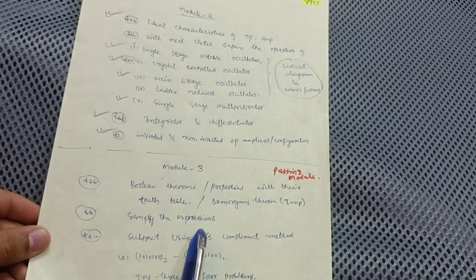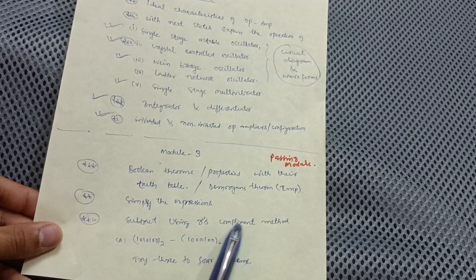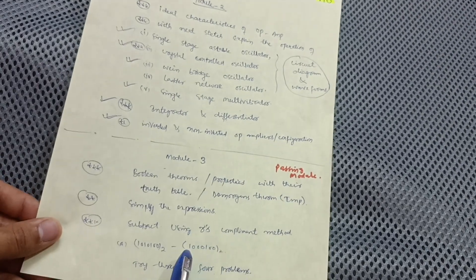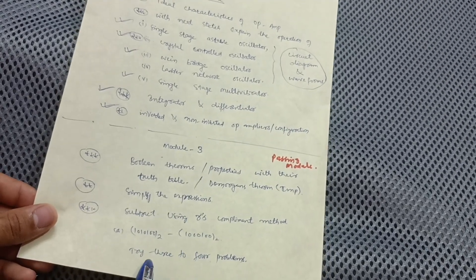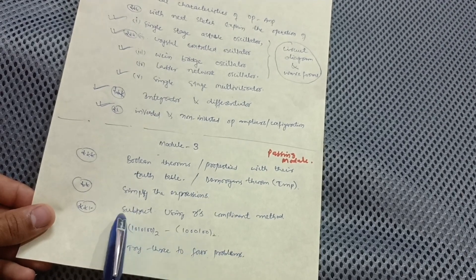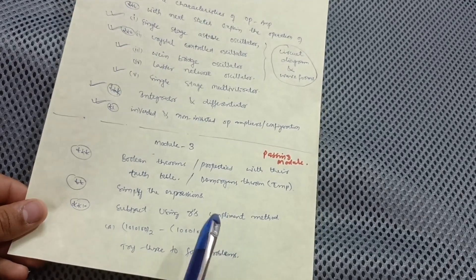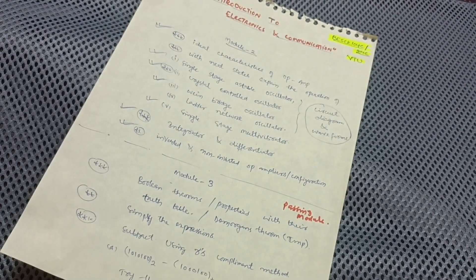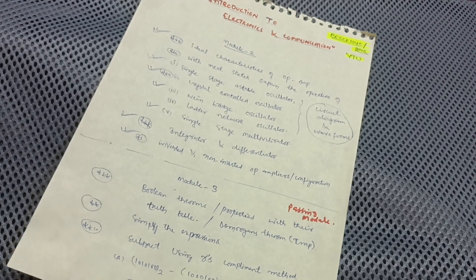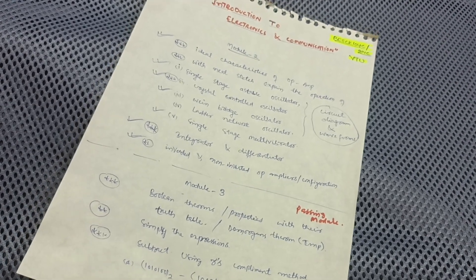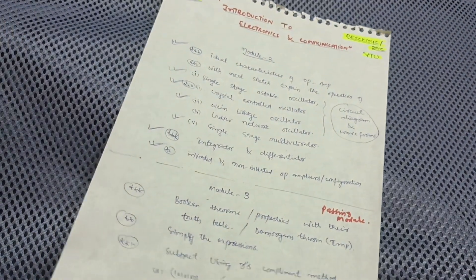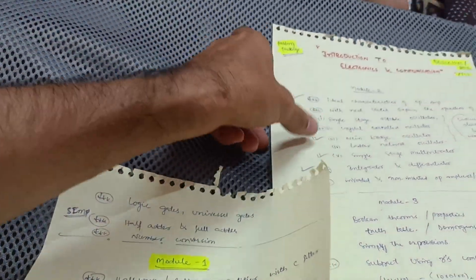There will also be questions on simplifying Boolean expressions and subtraction using the 2's complement method. These are very simple — practice three to four problems from this concept. You should cover at least 15 marks from this module. It is considered one of the toughest subjects in first or second semester engineering, so go through this module fully. Also focus on logic gates and universal gates like NAND, NOR, AND, and OR gates.